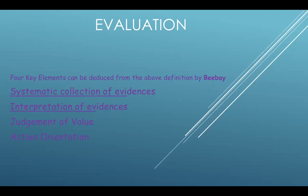The second key element is interpretation of evidences. Only gathering of evidences is not enough; gathering must also facilitate the judgment process. Interpretation should be done from all kinds of perspectives. The third key element is judgment of value — not only description of evidences is enough. It is an effort to judge how well a system, a process, or a product matches with the expected outcomes. Last is action-oriented: for the sake of merely giving grades and certificates, evaluation does not serve its purpose. Evaluation must lead to decision making.